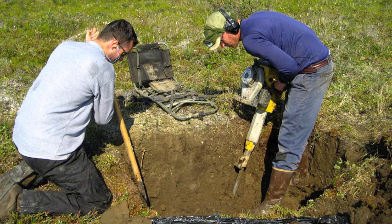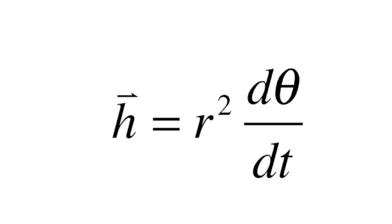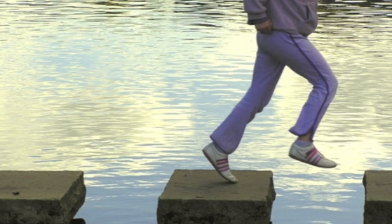After doing a little digging, it is found that the h vector is perpendicular to both the velocity and position. The k-hat direction is also perpendicular to both the velocity and position, so h can be written as simply r squared dθ/dt.